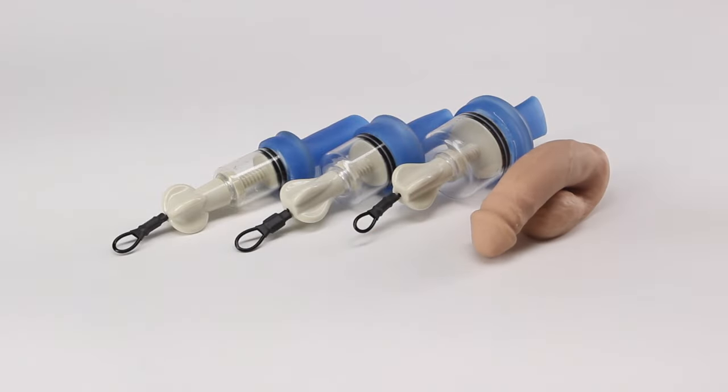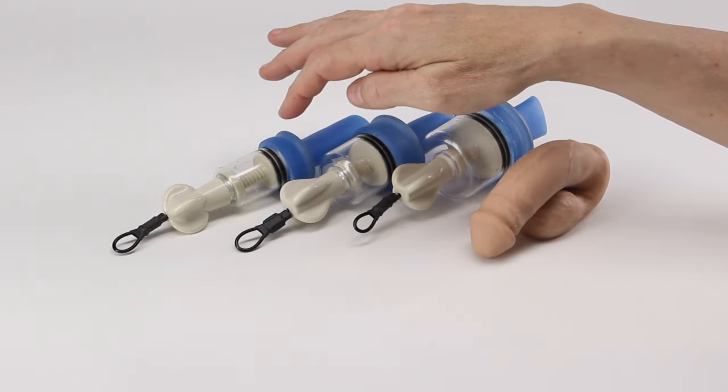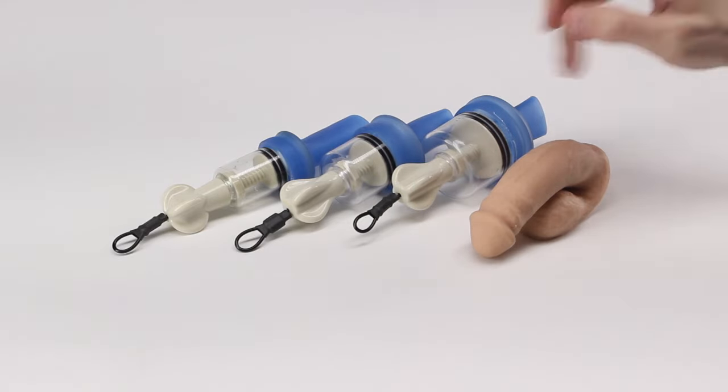The SiliStretcher comes in three different sizes. We have a 1.1 inch here, a 1.5 inch and a 2 inch diameter.